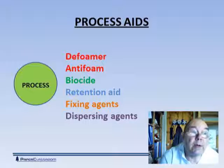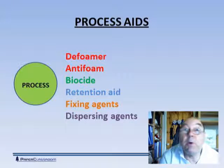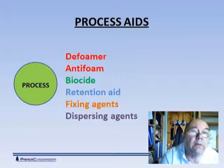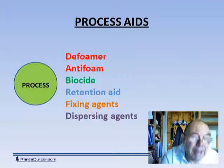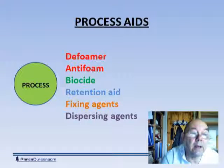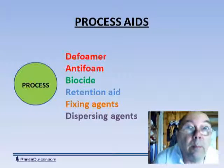Fixing agents act like mordants to fix dyes onto the fibers. And dispersing agents disperse bits of stickies to make them small enough so that they don't become large and cause a problem. If stickies remain very, very tiny, they're too small to do any damage. It's only when stickies come together and become big that they can rip a hole out of a sheet, block the mesh of the wire and stop water going through, or seal part of the surface of a dryer felt or a press felt.